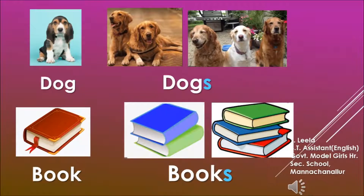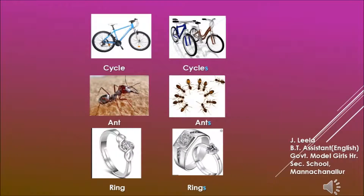Look at this picture, students. What do you see? The first one is the picture of one dog. When there is more than one, we call them dogs. Now look at the second row. We see one book in the first picture and many books in the second and third pictures. There are many ways we form plurals of singular nouns. Let us learn the rules of making plurals one by one.